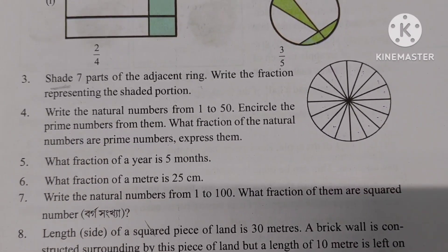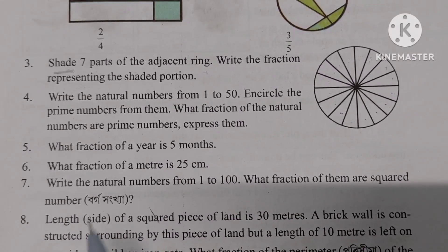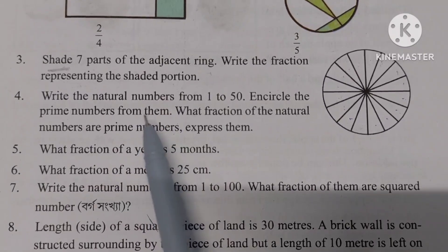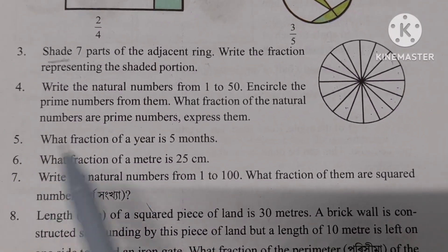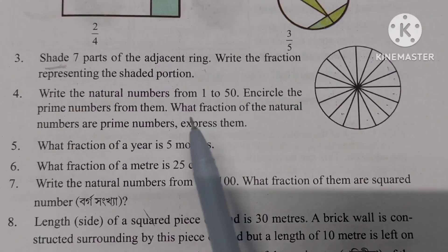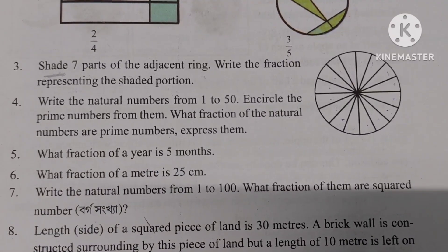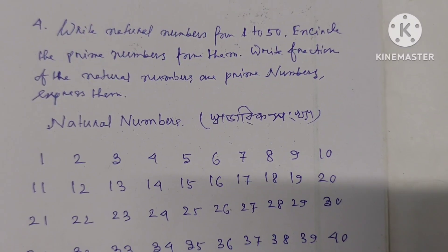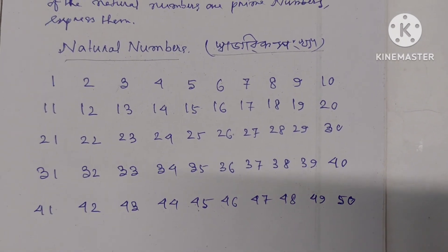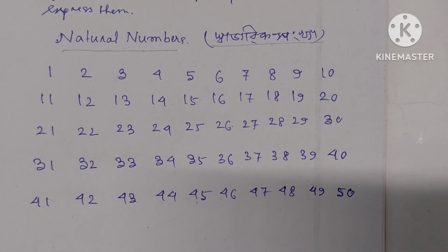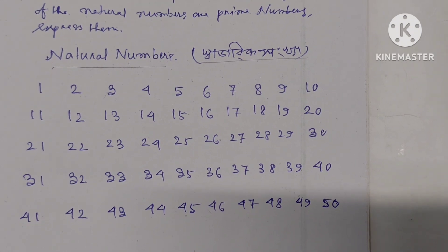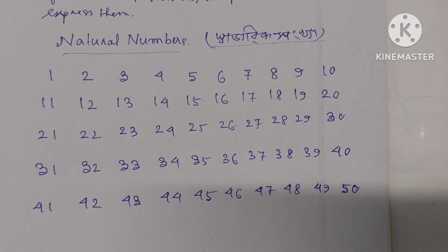Number 4: Write the natural numbers from 1 to 50. The prime numbers among them — at first we have to write the natural numbers. Counting numbers are called natural numbers.